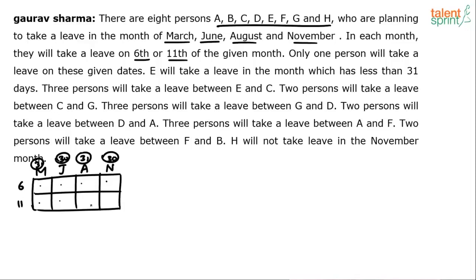There are four possibilities for E: June 6th, June 11th, November 6th, or November 11th. Using the clue that three persons take leave between E and C: if E is on June 6th, C comes on November 6th; if E is on June 11th, C comes on November 11th. Similarly, if E is on November 6th, C comes on June 6th; if E is on November 11th, C comes on June 11th.